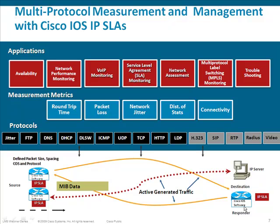This slide depicts all the applications, metrics, and protocols that can be used with IPSLA. As you can see, it's very wide in nature. It can generate support for a lot of protocols and give you very rich metrics — for example, round-trip delay, packet loss, network jitter, loss statistics, and connectivity. It can be used for a wide variety of applications like availability, network performance monitoring, virtual IP, troubleshooting, and ETLS.